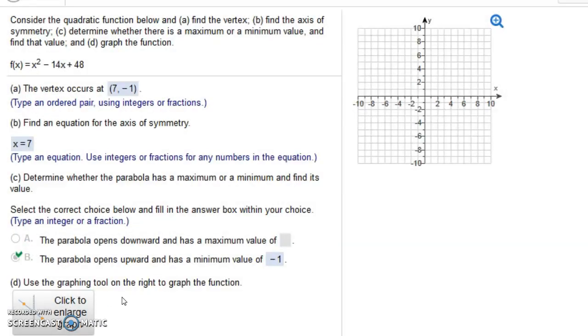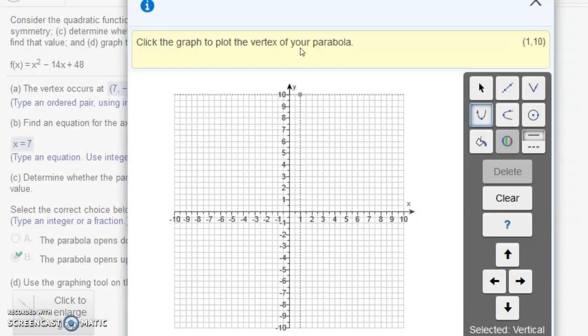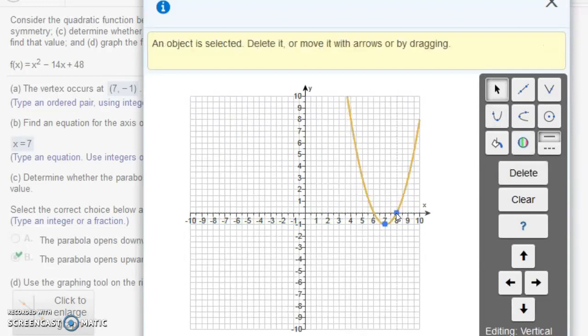And finally, use the graphing tool on the right to graph the function. So let's click to enlarge the graph. So notice, we're going to pick this one here that has a parabola. And we're going to try to plot the point. Let's see, what was it? 7 minus 1. 7 minus 1 is right here. And then 7 minus 1, the question is, what should the parabola look like? How is the parabola going to look? Well, it's not going to open down. It is going to open up, but how steep will it open up? Well, it turns out that if you have a leading coefficient of 1, which we do here, right? Our leading coefficient is 1, for 1x squared. That means if you go to the right 1, so we go over to 8, and then we go up 1, the point will go through there.